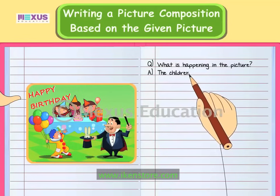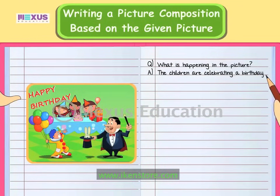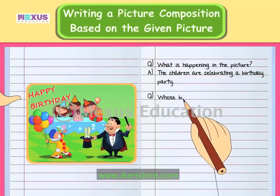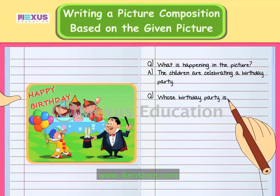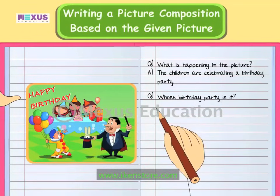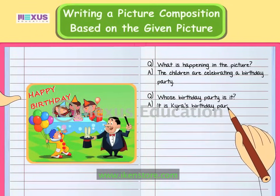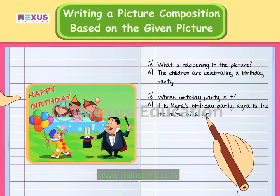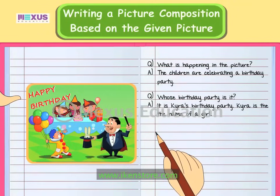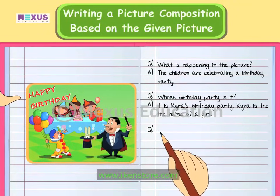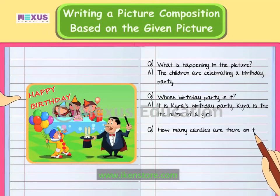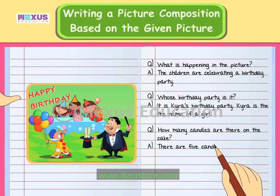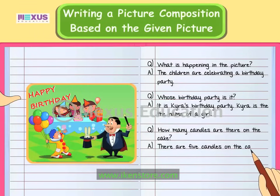The children are celebrating a birthday party. Whose birthday party is it? It's Kaira's birthday party — Kaira is the name of a girl. How many candles are there on the cake? There are five candles on the cake.